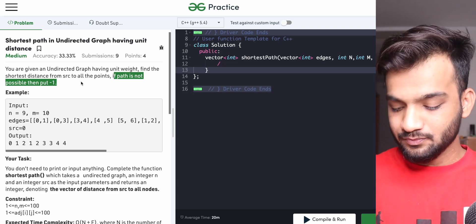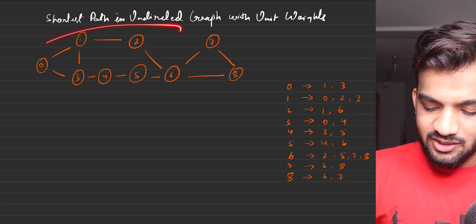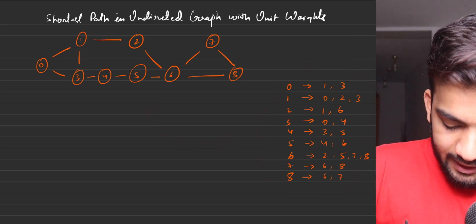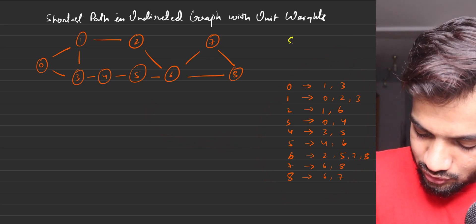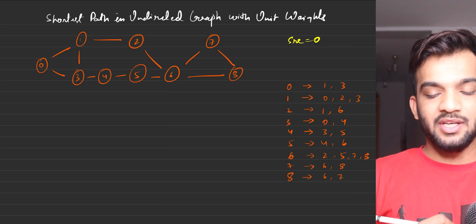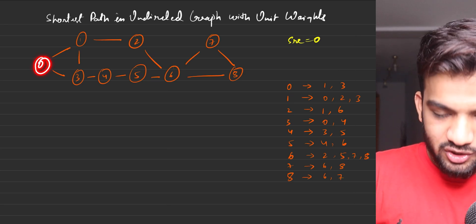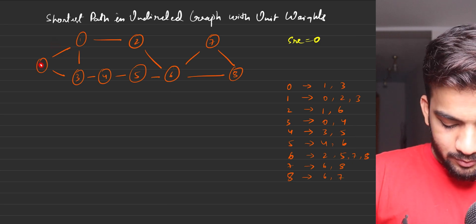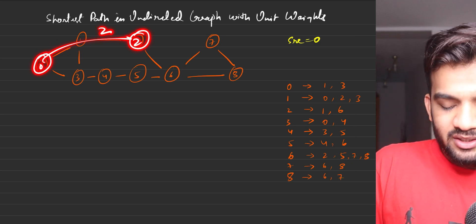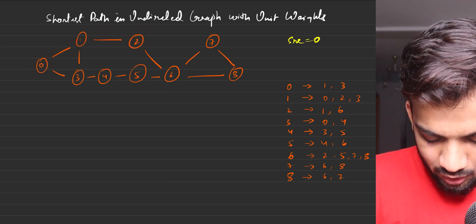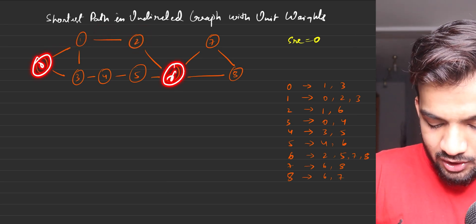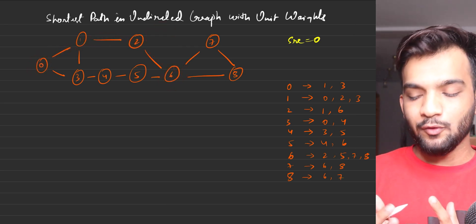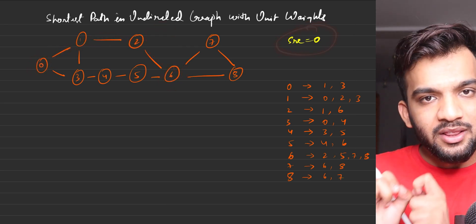Assume this is the given graph with its adjacency list, and the source is zero. From zero, the distance to node one is one, the distance to node two is two, and the distance to node six is three — that is the shortest distance. You have to find the shortest distance from zero to all given nodes.